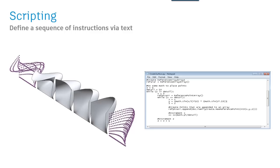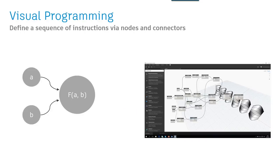With traditional scripting, you define a sequence of instructions via text — for example, a small Python script that can run inside Dynamo and produce shapes. With visual programming, you define the sequence of instructions using elements called nodes and connectors. In Dynamo, a graph uses visual components — sticky notes and connectors — that define the data flow. The good thing about Dynamo and visual programming is that these relationships become dynamic, allowing you to introduce even more intelligence within your model.